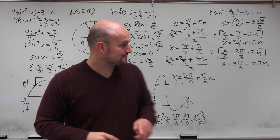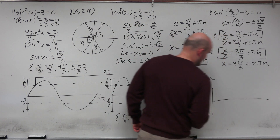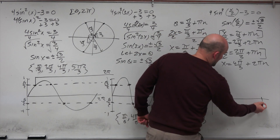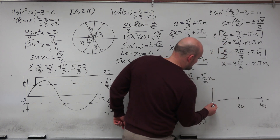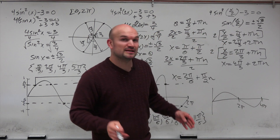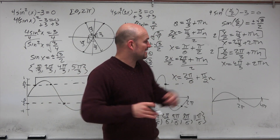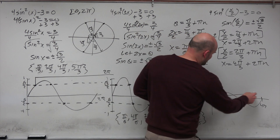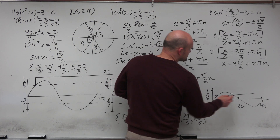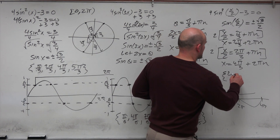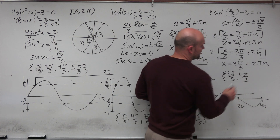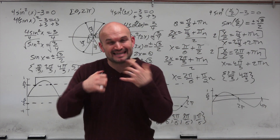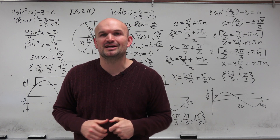With the half angle, the graph stretches instead of compresses. The graph doesn't complete a period until 4π, meaning only half a period fits in [0, 2π]. So there are only two solutions: 2π/3 and 4π/3. Adding 2π to either solution exceeds the restriction. That is how the half angle and double angle impact solutions when solving trigonometric equations.